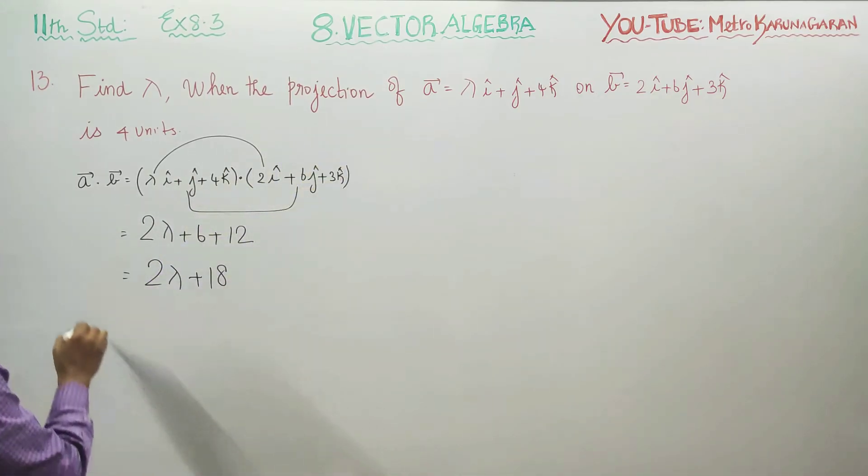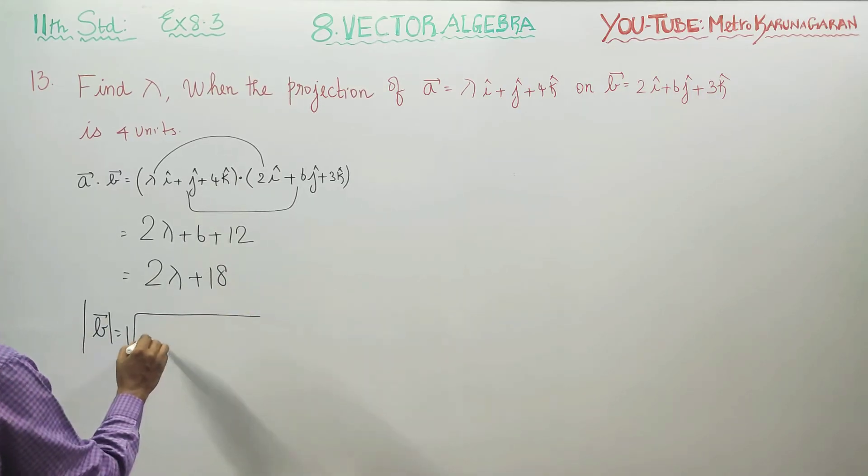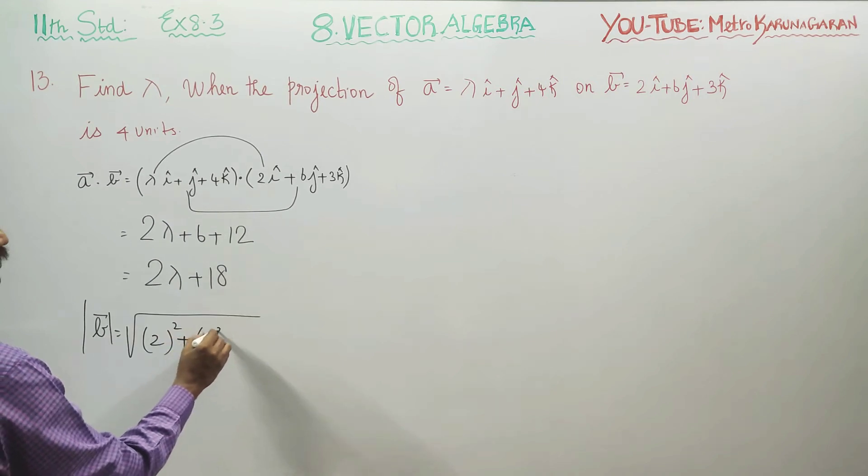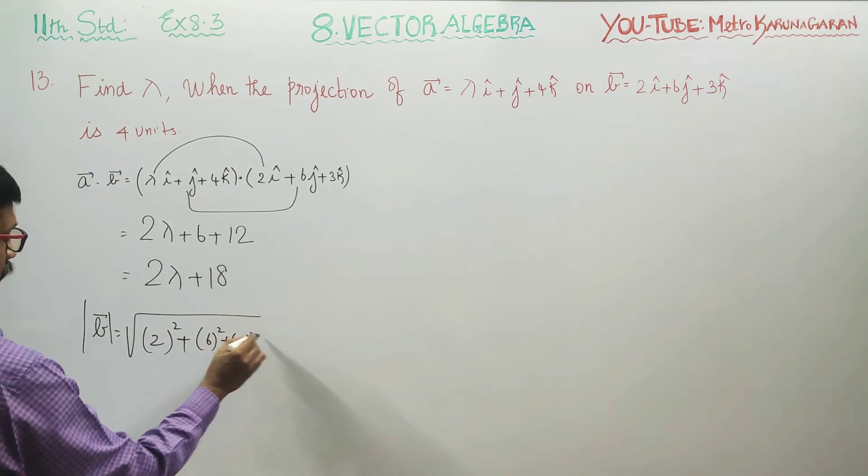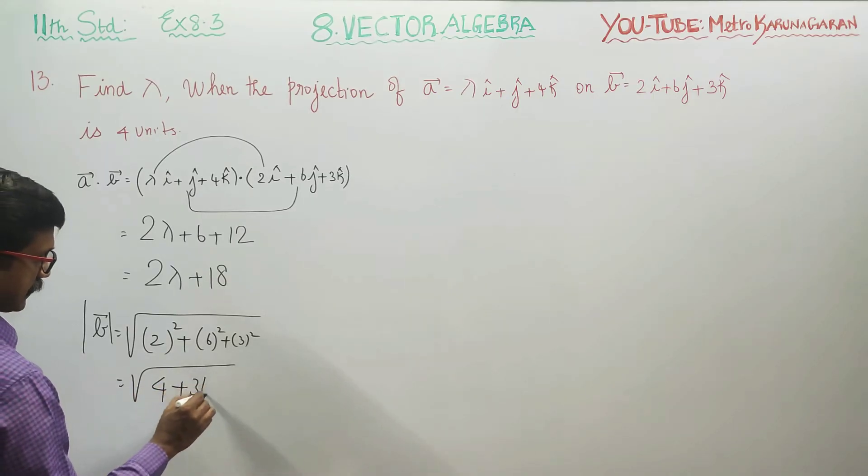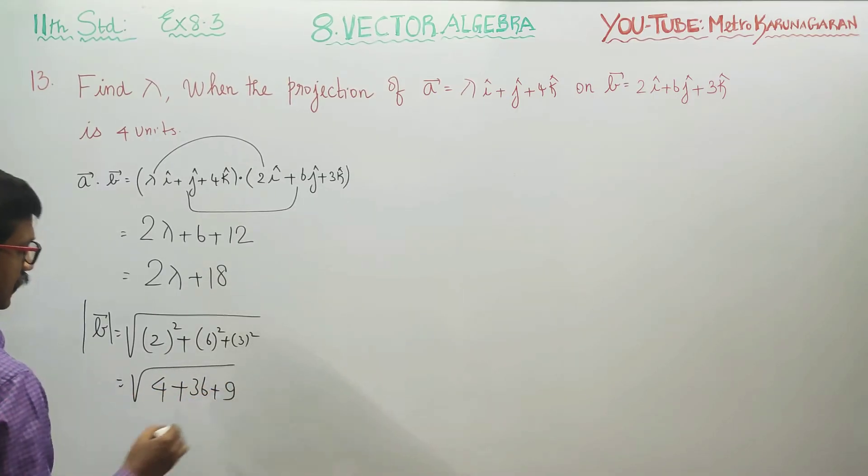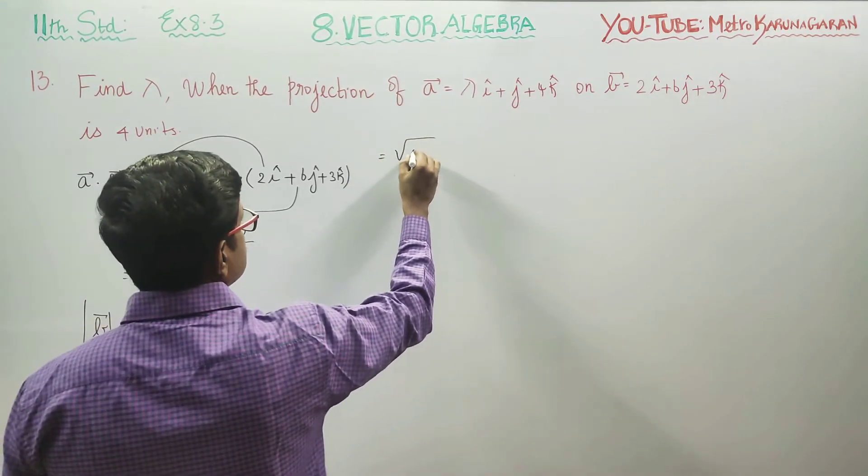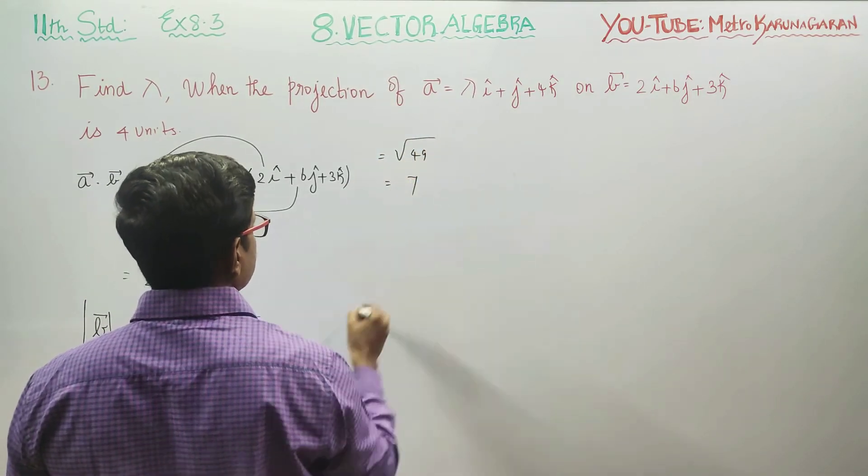Now I will find magnitude of B vector. Magnitude is square root of X square plus Y square plus Z square, which is square root of 4 plus 36 plus 9, equals 49. Root 49 is 7.